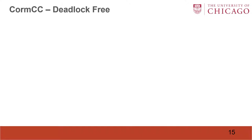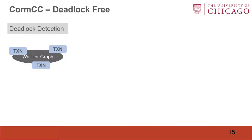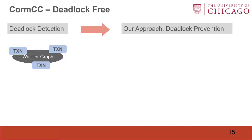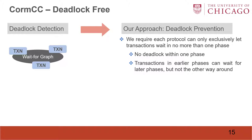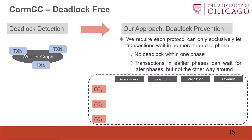Next, we answer the question: how to make COMCC deadlock-free? A straightforward method is to use a waits-for graph to detect deadlocks. However, we do not want to introduce any additional concurrency control overhead. Therefore, we take another approach of deadlock prevention. We require that each protocol can only exclusively let transactions wait in no more than one phase. This means two things: first, there is no deadlock within one phase; second, transactions in earlier phases can wait for later phases, but not the other way around.